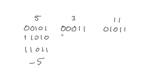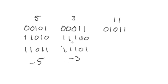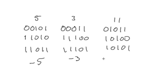Likewise with 3: invert to get 11100, add 1 to get 11101 — that's negative 3. And with 11: invert to get 10100, add 1 to get 10101 — that's negative 11. You'll notice that in all of these examples, the most significant bit is always a 1.